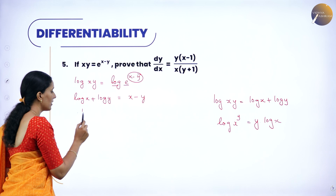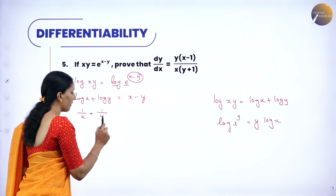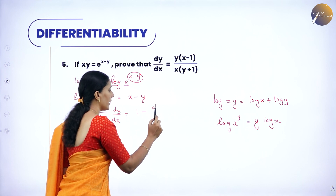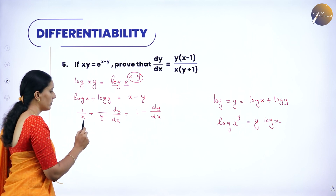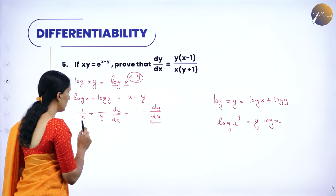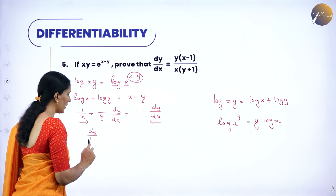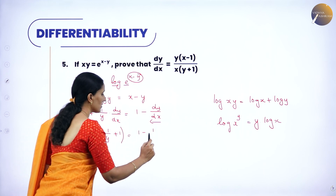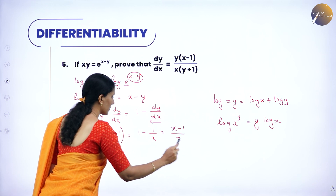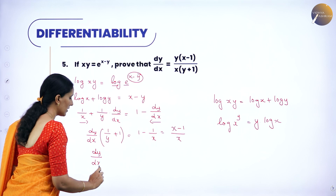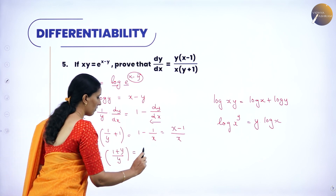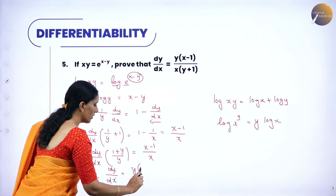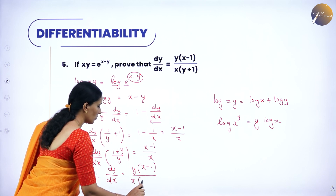Now differentiate both sides. Derivative of log x is 1 by x. Derivative of log y is 1 by y, and you write dy by dx. Derivative of x is 1, derivative of y is dy by dx. Rearranging and taking dy by dx as a common factor: dy by dx into (1 by y plus 1) equals 1 minus 1 by x, which is (x minus 1) by x. So dy by dx into (1 plus y) by y equals (x minus 1) by x.